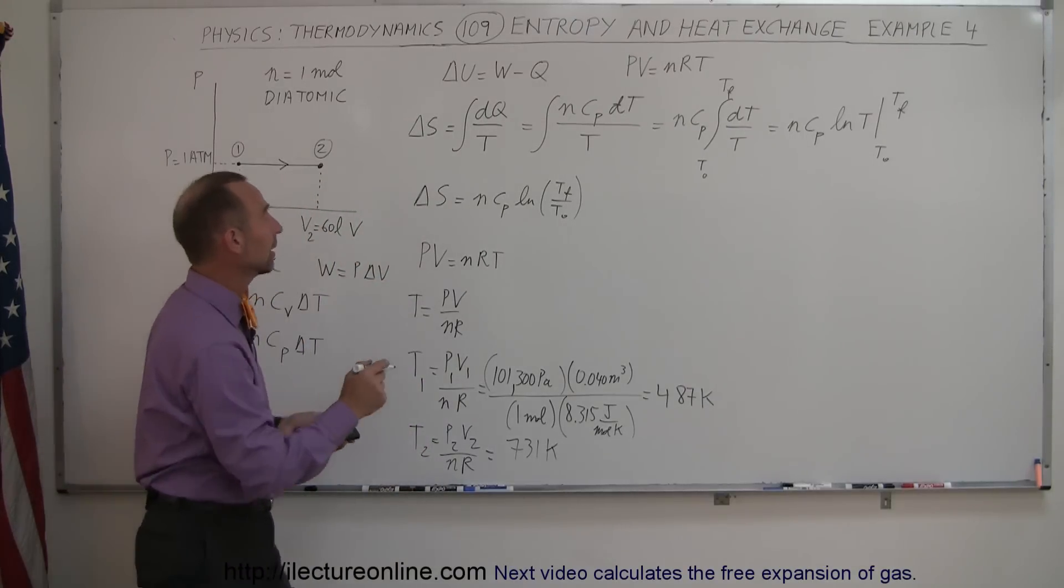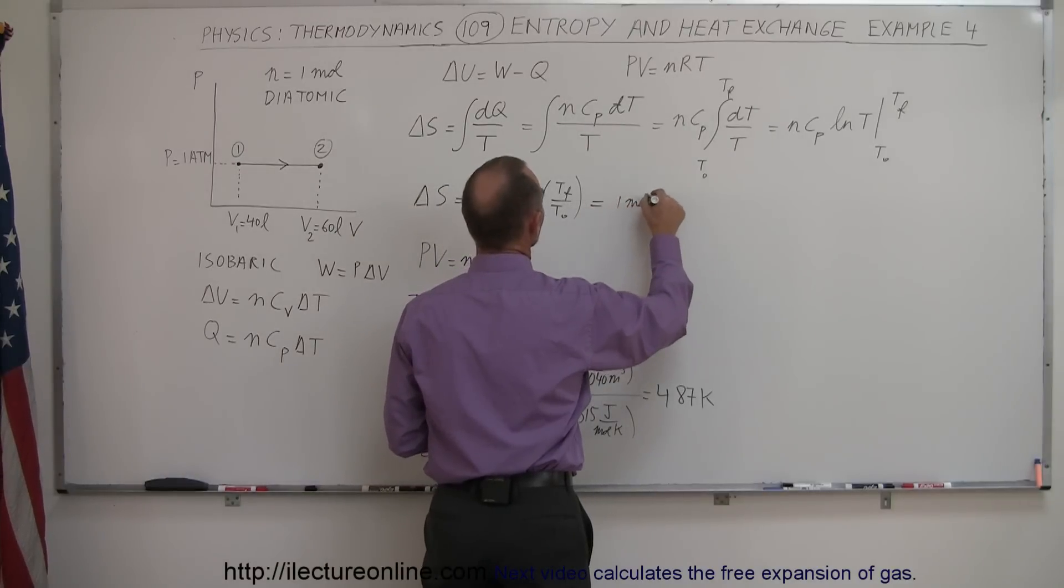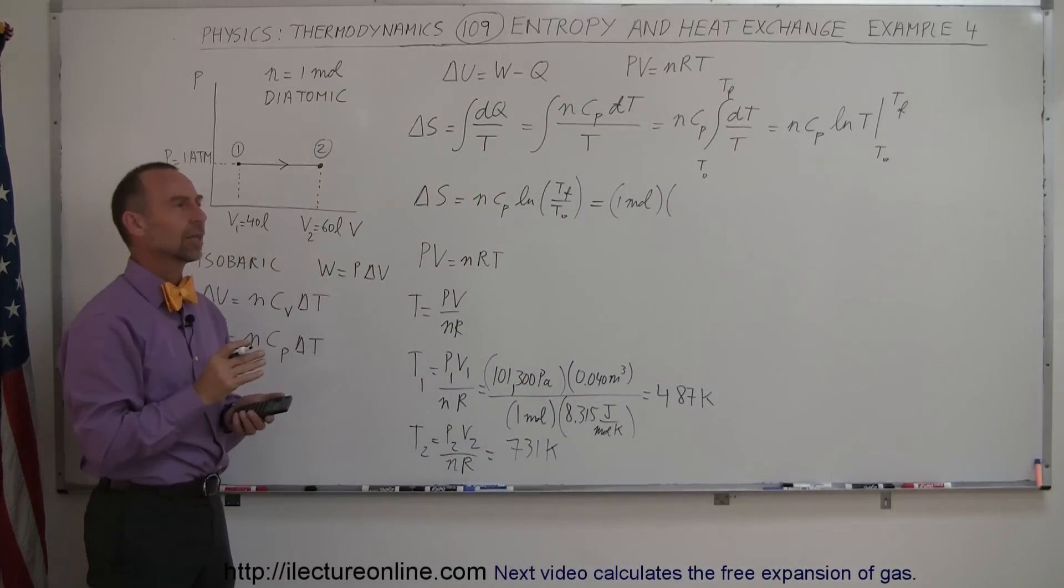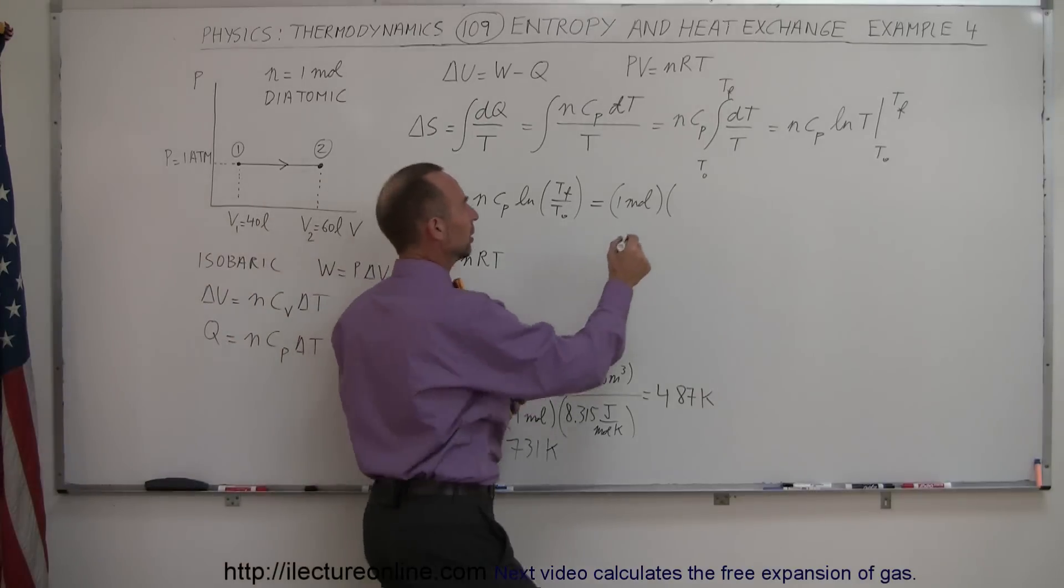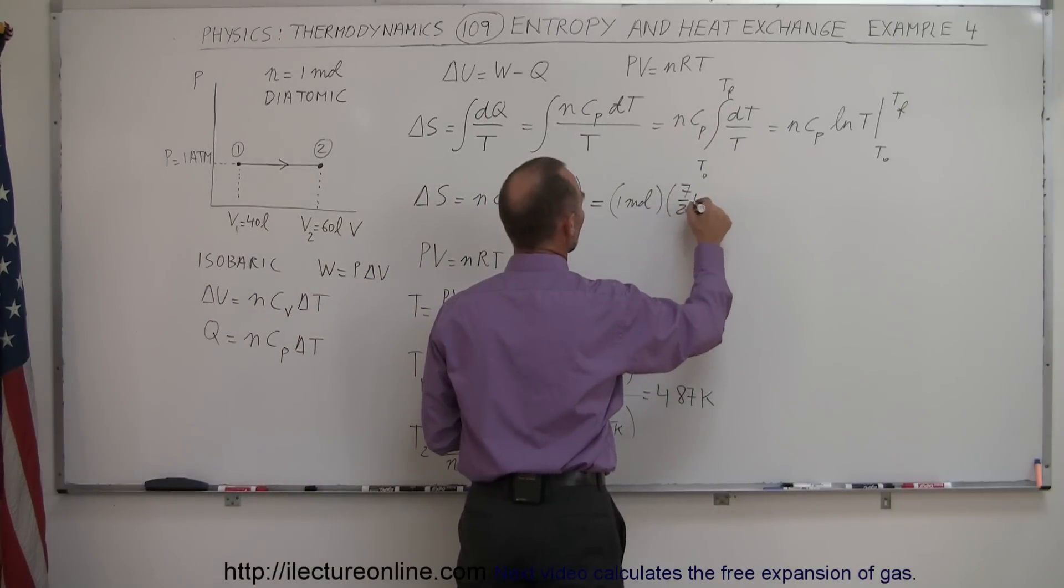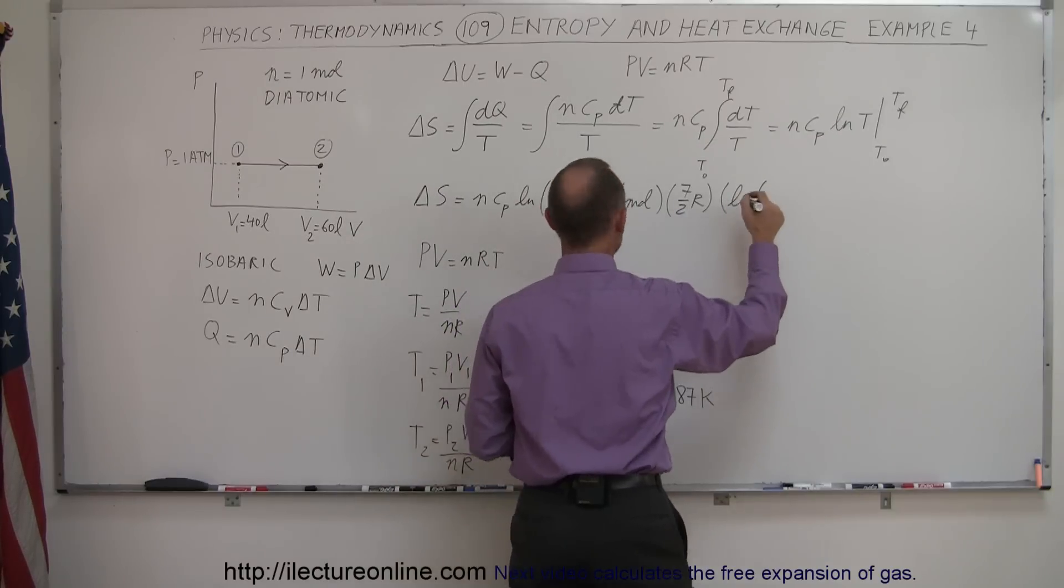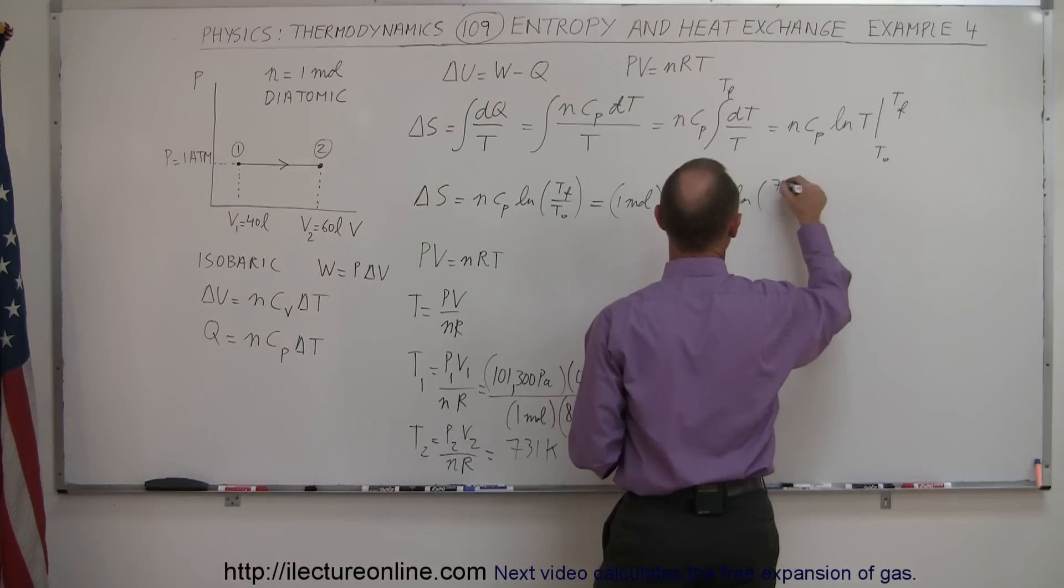Now we'll go ahead and plug that in here, so this is equal to 1 mole. C_P for a diatomic gas, that would be 7 halves R, 7 over 2R, times the natural log of T final, which is 731, divided by T initial, which is 487.